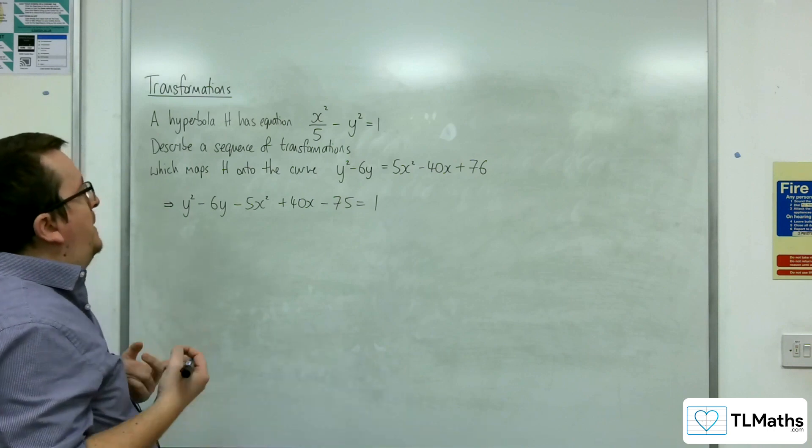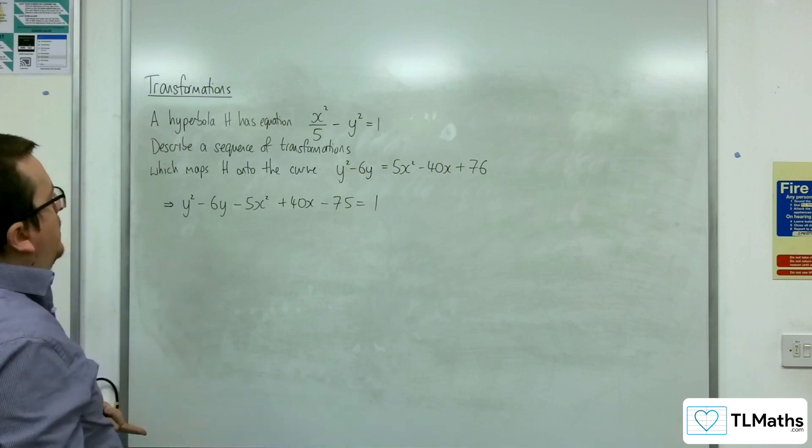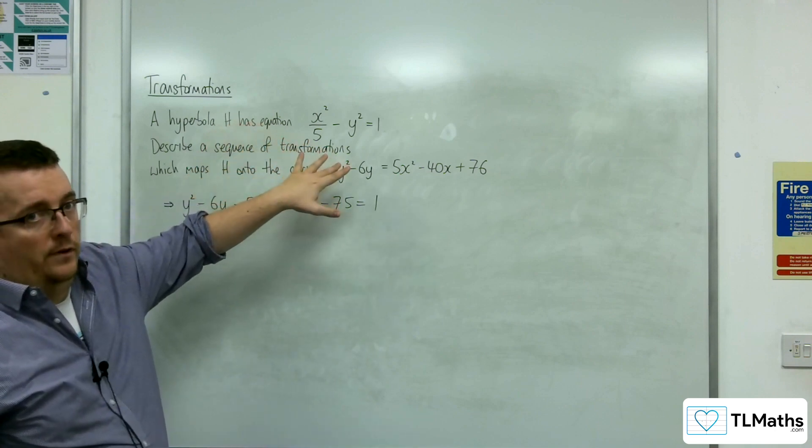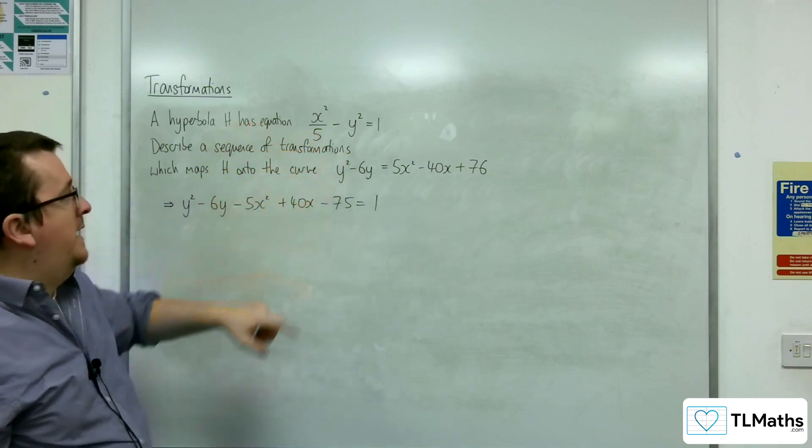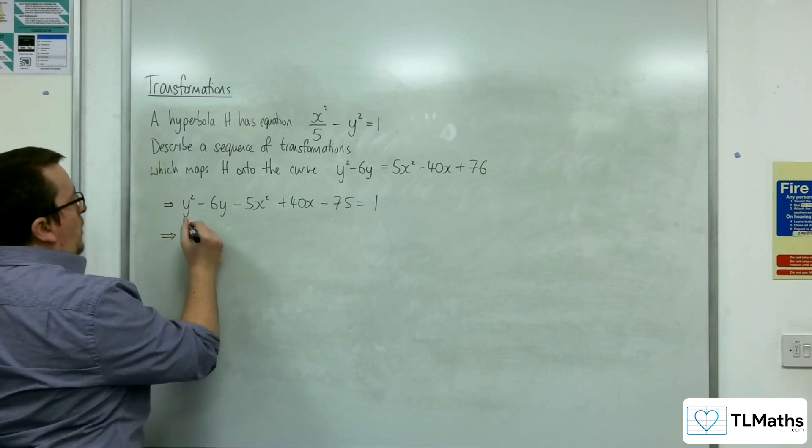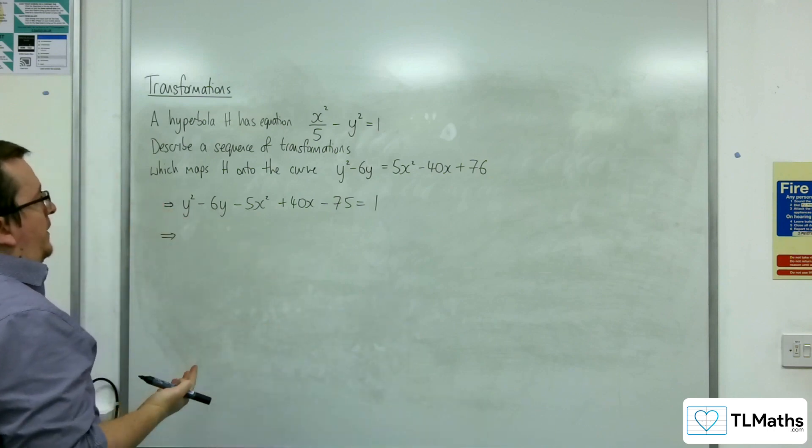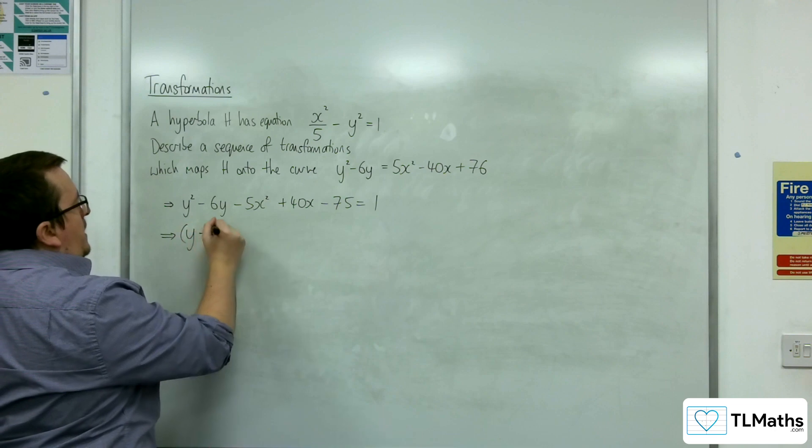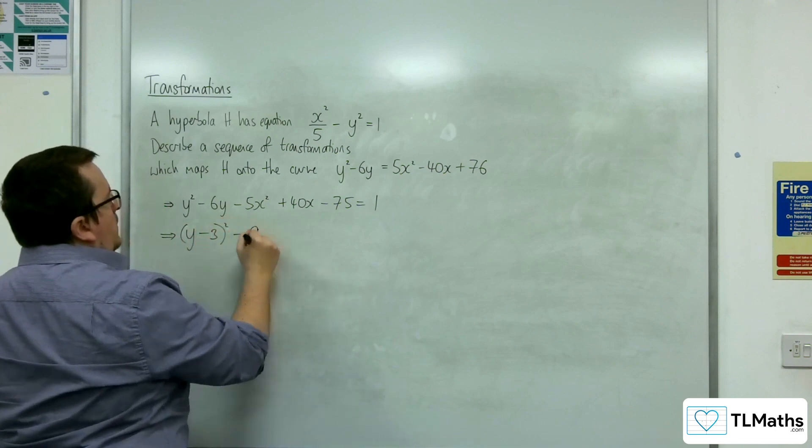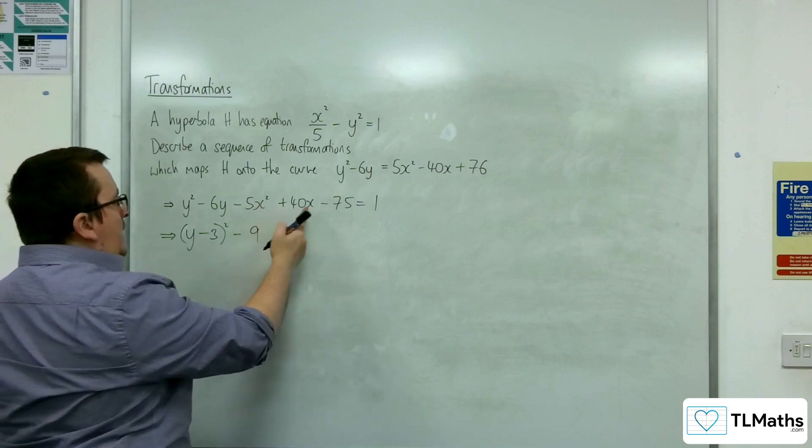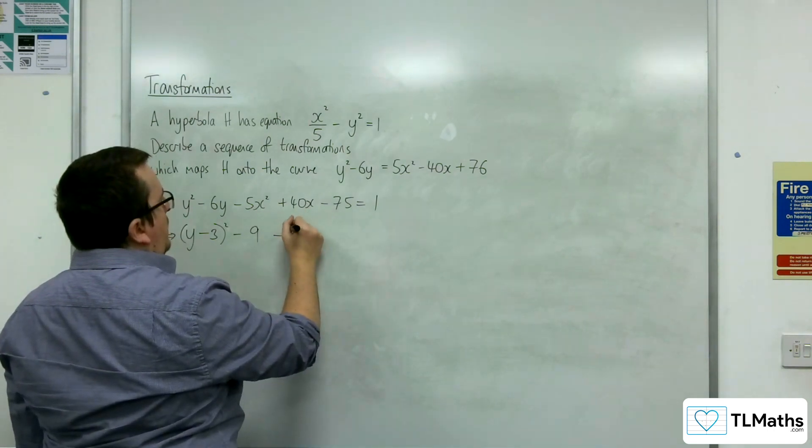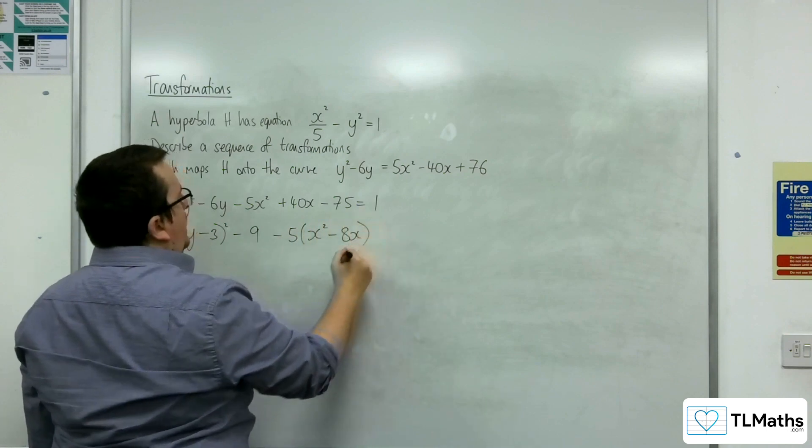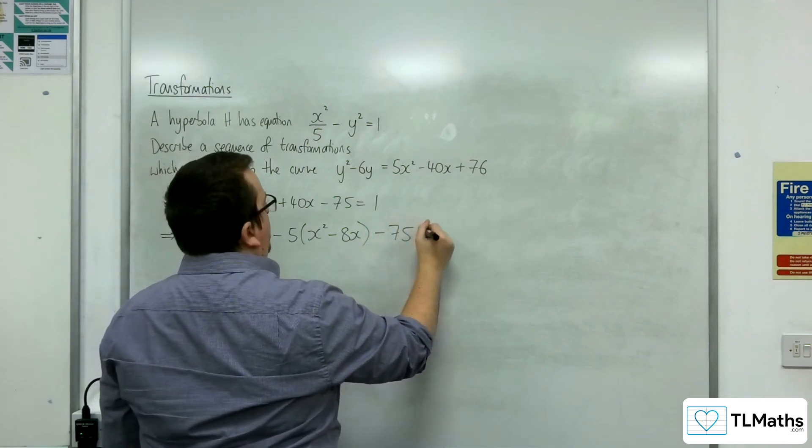So that means that leads me to think, okay, well, if I could then get the y squared part over 5, that would be the first instinct to get there. So I'm going to use completing the square here on both the y's and the x's. First of all, on the y's, we're going to get y take away 3 squared. We've got an extra 9 I've got to get rid of. Now, with the x's, the first thing I'm going to do is I'm going to factor out the minus 5 and have x squared take away 8x inside the bracket. And we've still got the minus 75 is equal to 1.